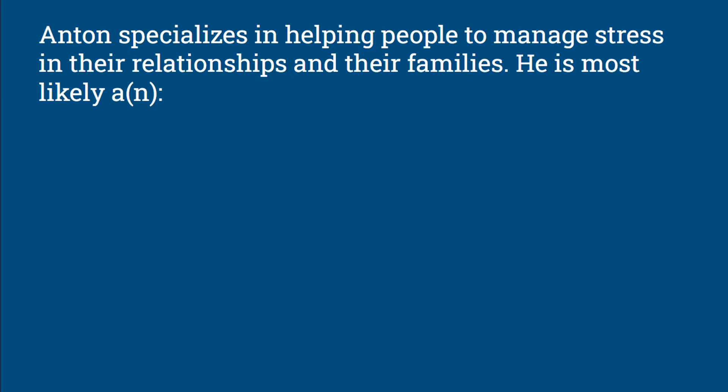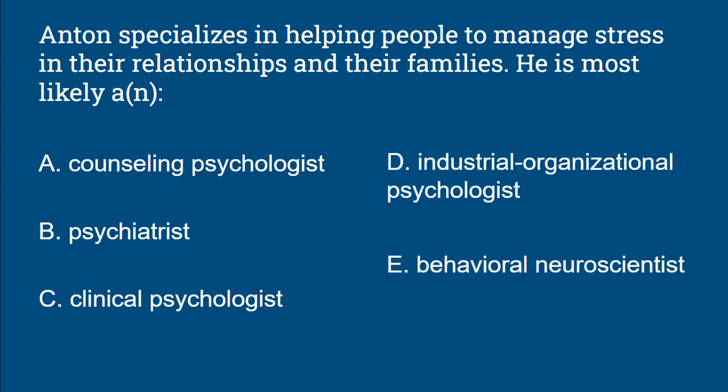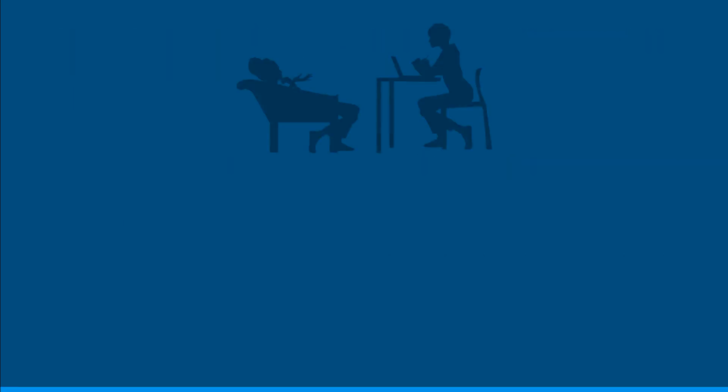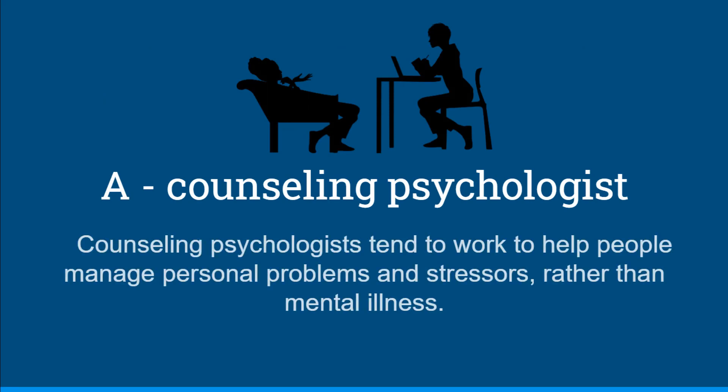Anton specializes in helping people to manage stress in their relationships and their families. He's most likely — is he a counseling psychologist, a psychiatrist, a clinical psychologist, an industrial organizational psychologist, or a behavioral neuroscientist? Anton is most likely a counseling psychologist. Counseling psychologists tend to work to help people manage their personal problems and stressors in their daily lives, rather than working with mental illness.